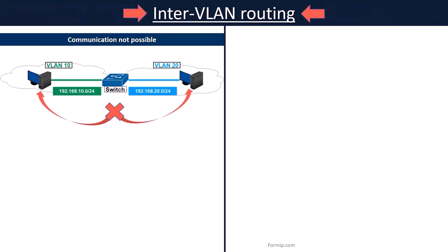Inter-VLAN routing can only be done with a Layer 3 device, such as a router, as these interfaces can be connected to separate VLANs. As a reminder, the switch is a Layer 2 device.